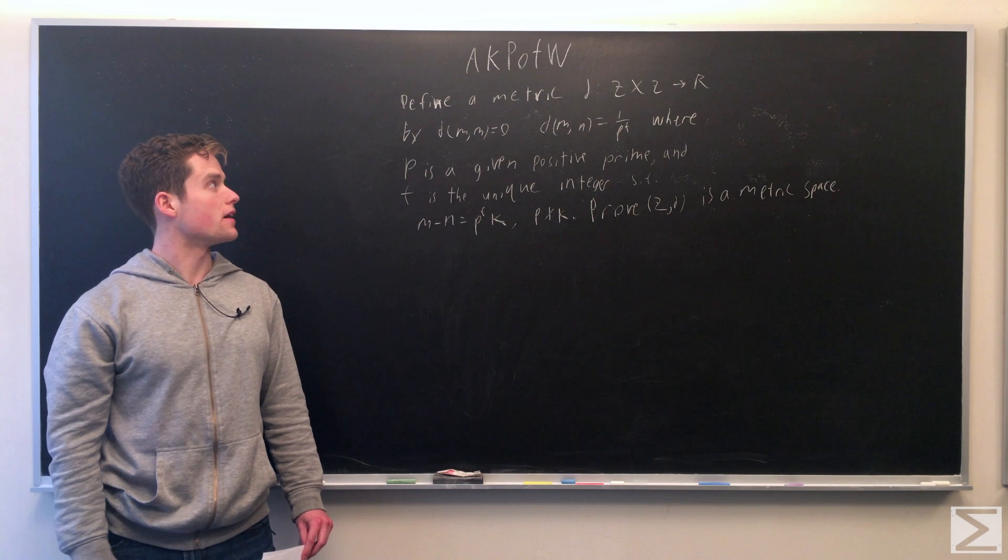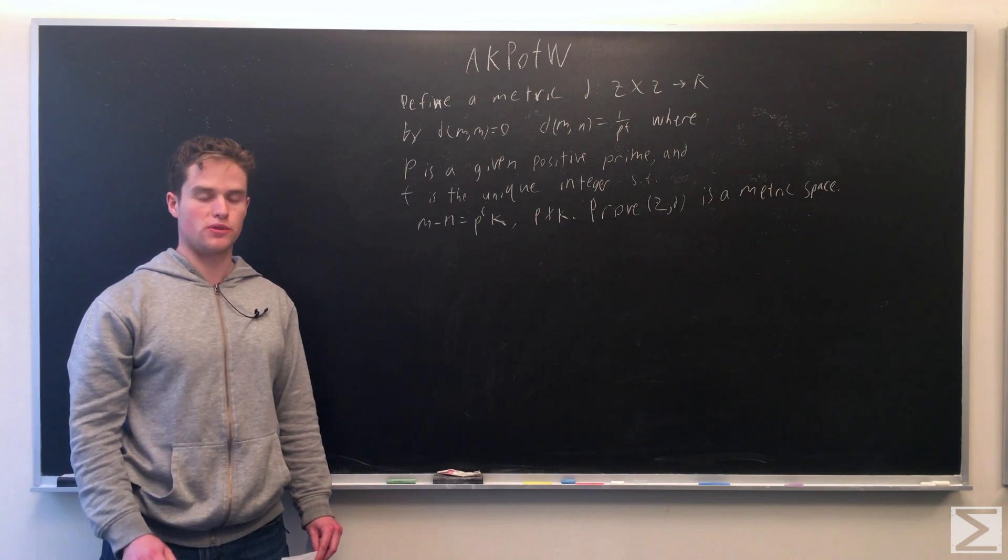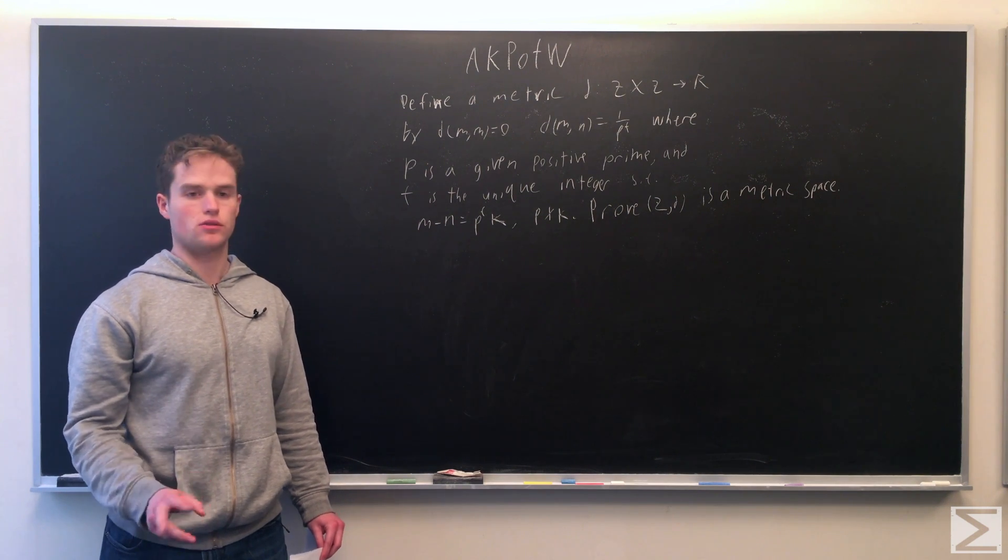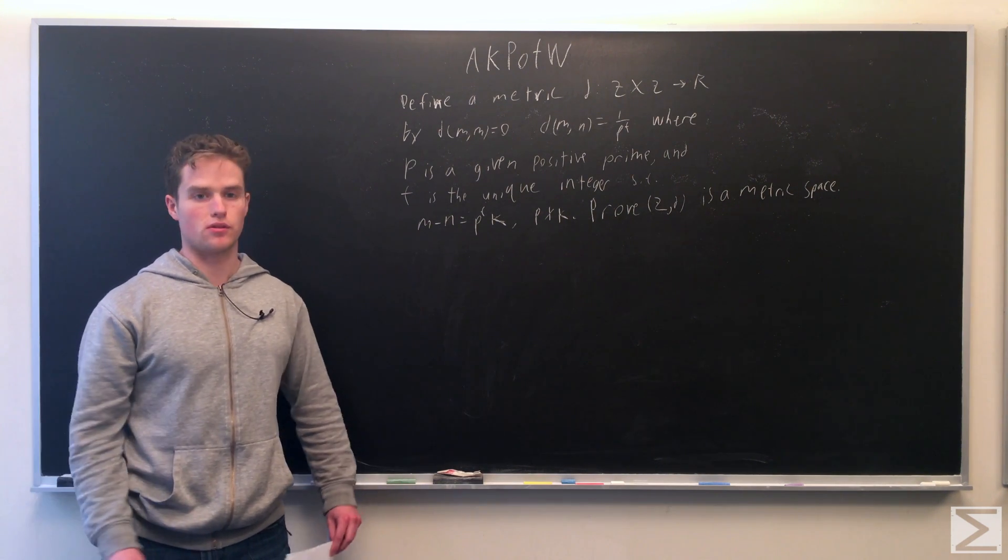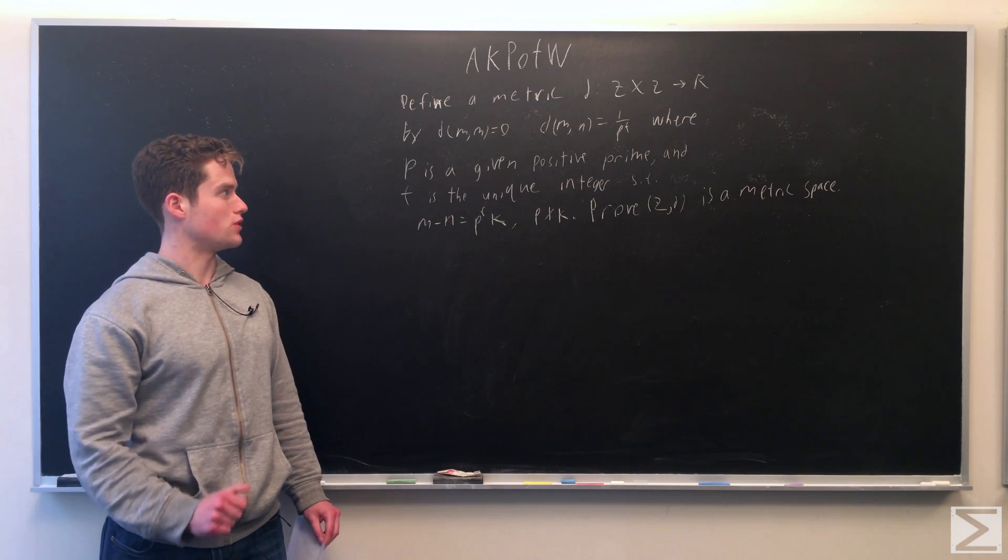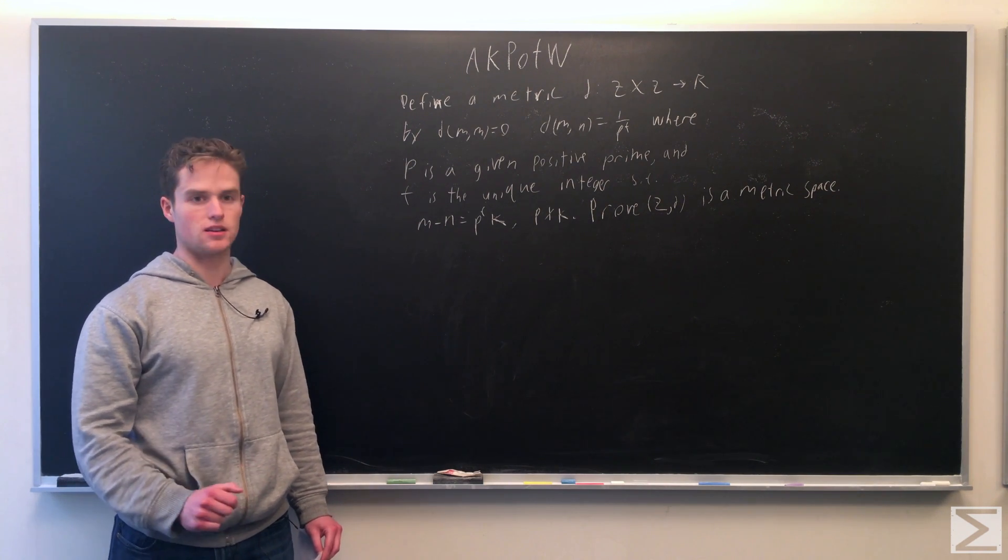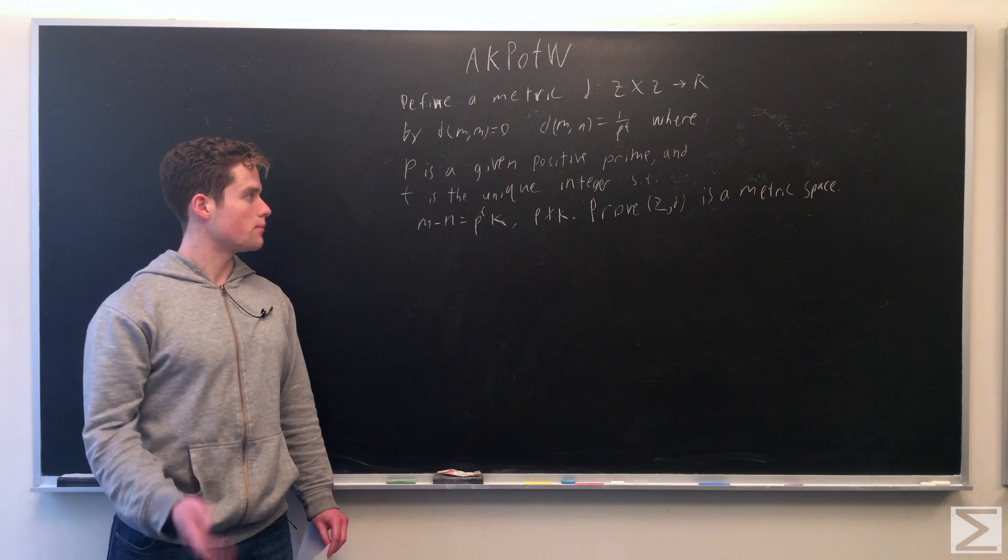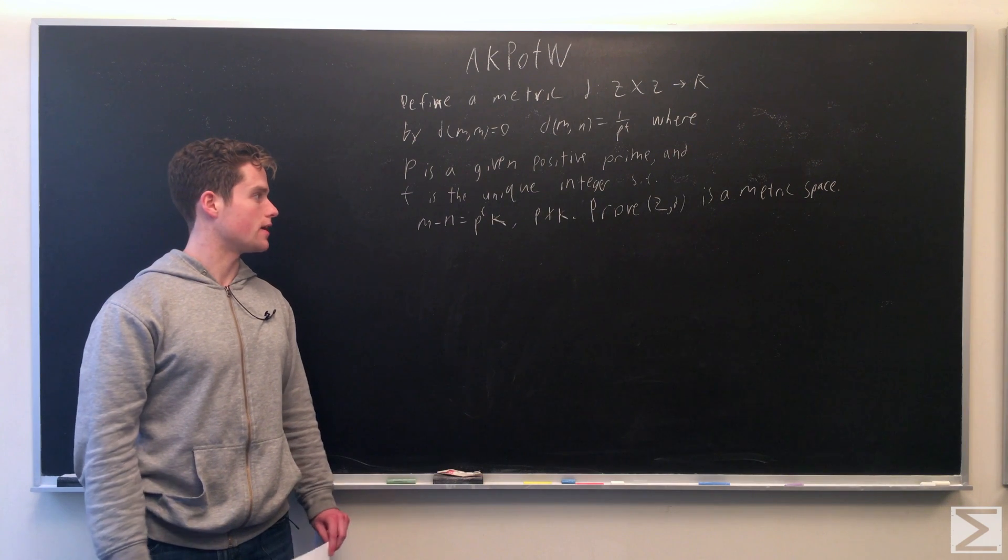We define it by the distance between two of the same integers is zero. The distance between two different integers is 1 over p to the t, where p is a given positive prime and t is a unique integer such that m minus n equals p to the t times k, and p does not divide k. So it's however many times p divides m minus n.